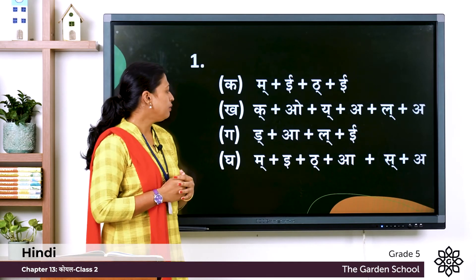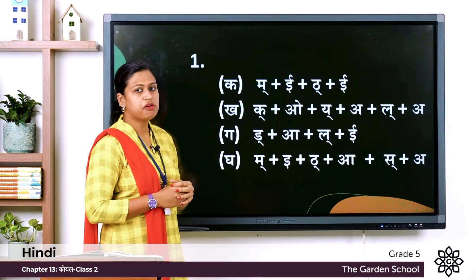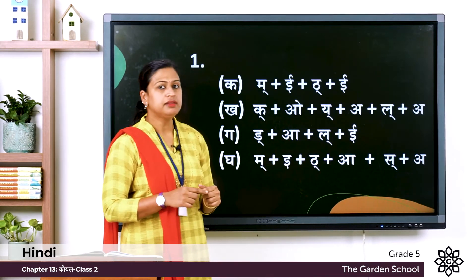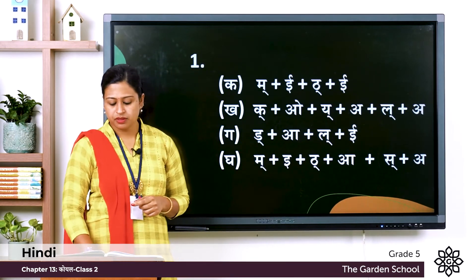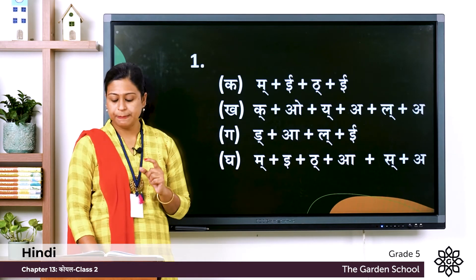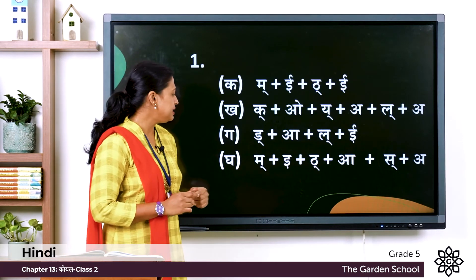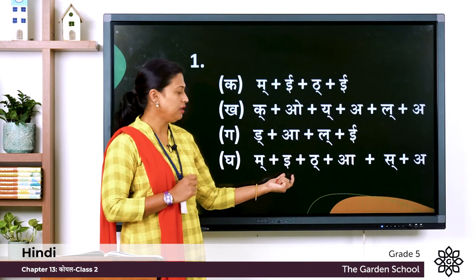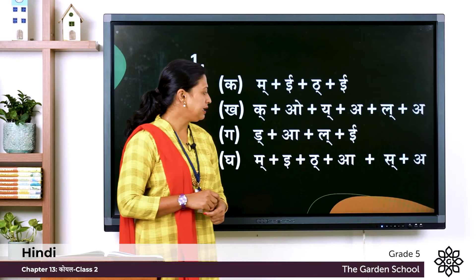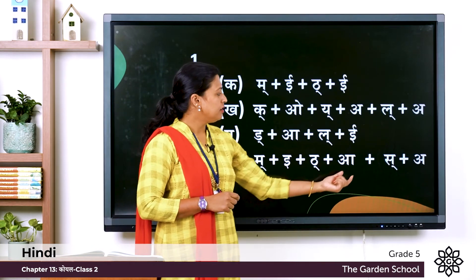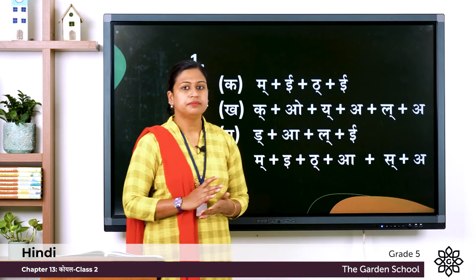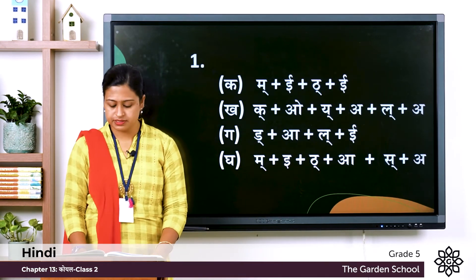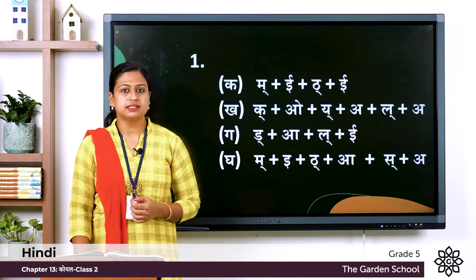Next one is डाली — here we write: short form of दा, plus आ की मात्र, plus ला, and ये symbol. Ga: the word is मिठास — this we write: short मा, plus ये (that is छोटी ये की मात्र), plus ता, plus आ की मात्र, plus सा, plus आ. So this was already discussed in the previous classes — this was the first exercise.